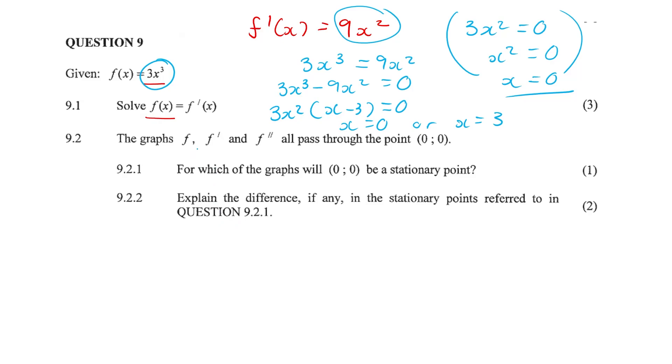The graphs f, first derivative of f and second derivative of f all pass through the origin where x = 0 and y = 0. For which of the graphs will the origin be a stationary point? Well it is going to be for the f graph and the first derivative of the f graph.